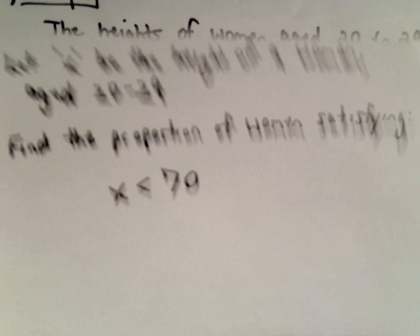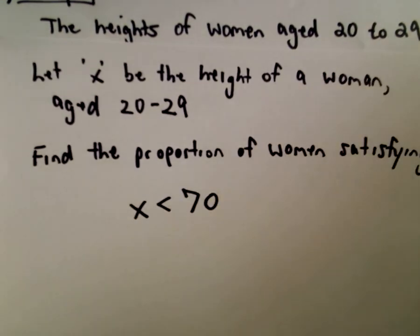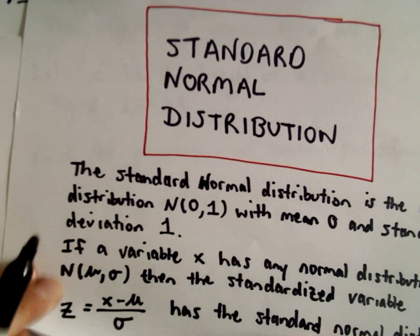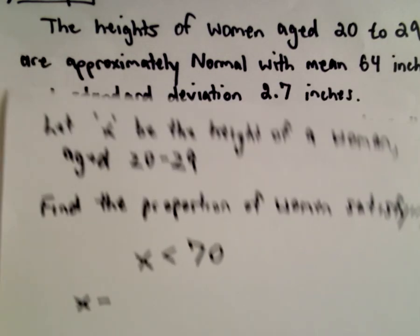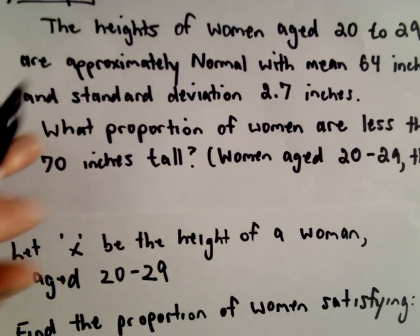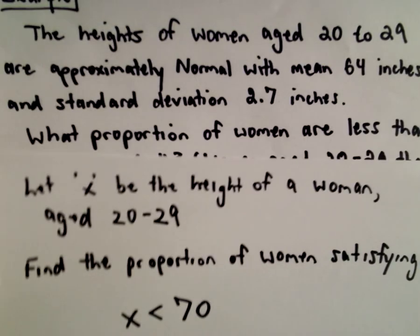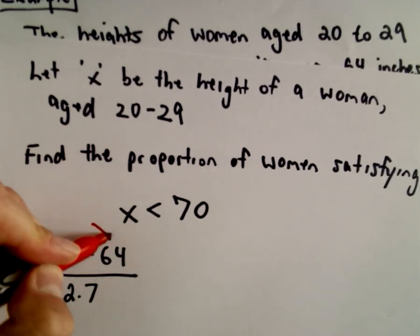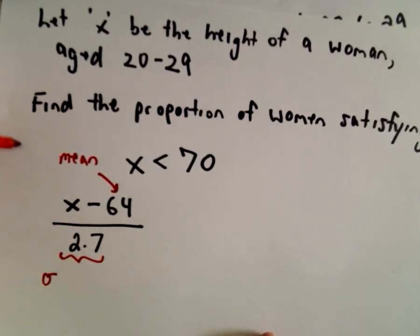We want their height to be less than 70 inches. The idea is now I'm going to turn this into a standardized variable by subtracting the mean and dividing by the standard deviation. So I'm going to subtract the mean. We said the mean was 64 inches, and I'm going to divide by the standard deviation, which is 2.7. This is the mean and this 2.7 was my sigma, which is the standard deviation.